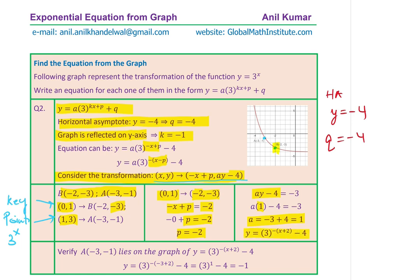Therefore, the function is y equals 3 to the power of minus x plus 2, in brackets, minus 4. That is the transformed equation. Now we can use the second point to check the result. Substitute x equals minus 3 into the equation: 3 to the power of minus bracket minus 3 plus 2, which gives 3 to the power of 1, minus 4, which equals 3 minus 4 equals minus 1. We do get the point, so the check confirms the equation is correct.